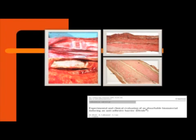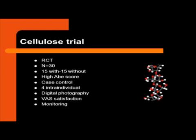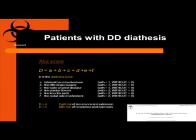I conducted a randomized cellulose trial — 15 patients with and 15 without implant. I always use patients with a high Dupuytren's diathesis risk score, as Abe described. There were also four intra-individual controls — patients treated with implant in one hand and without in the other. I followed them with digital photography and satisfaction scores. I use a DASH score too, but I've shown it's not correlated with goniometric outcomes and is always below 10 — normal for a general population. I closely monitor these patients, always using high-risk patients; otherwise you'd need 200 patients to see any results.